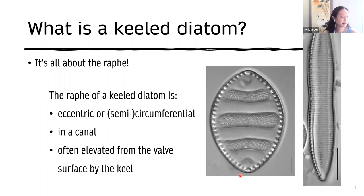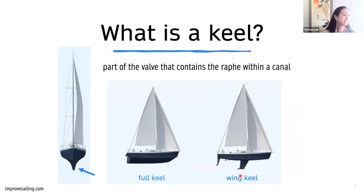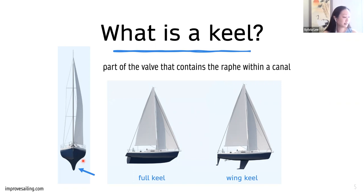The raphe is also in a canal, and it's often elevated from the valve surface by the keel. So what is a keel? If you're like me and don't know very much about boats, you would not have known what a keel is. On a sailboat, there's a part of the boat that goes below the water and provides structure, extending down below the water. In a diatom, that would be the part of the valve that contains that raphe within a canal. As in boats, there are a variety of keels.